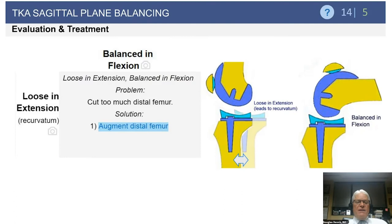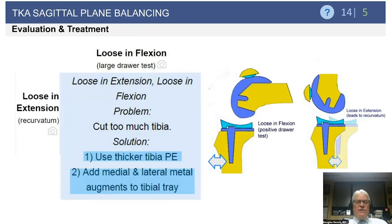How about loose in extension and balanced in flexion? Here the problem is too much distal femoral resection. You can solve that problem simply by augmenting the distal femur, which lengthens your femur and will subsequently correct the looseness in extension.